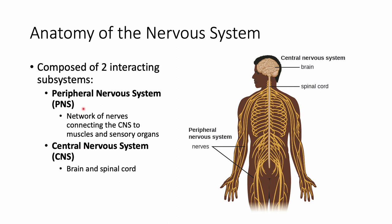The peripheral nervous system is a network of nerves going throughout your body, connecting the central nervous system to all of your muscles and sensory organs and communicating back with the central nervous system. The central nervous system is composed of your brain and spinal cord. We'll go into more depth about the differences in these systems and what that means for infection.